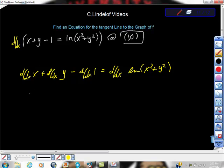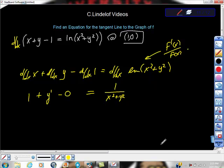So a lot of this differentiation we can do easily. We know that the first derivative of x is just 1. We also know that the first derivative of y is y prime, and the first derivative of 1 is 0. Then we're going to go to this side and take the derivative of this. Remember that for ln, the derivative is f prime of x over f of x.